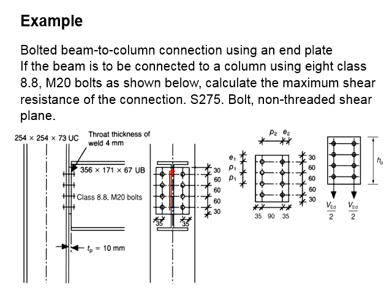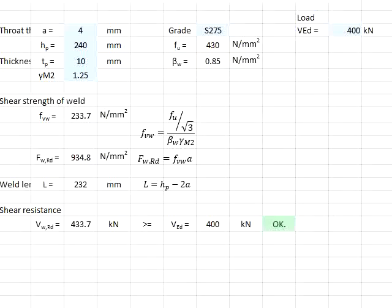In this case, you will have welding from both sides. This value will need to be multiplied by 2, which gives you 867.4 kN in total.